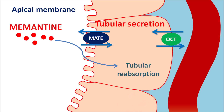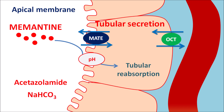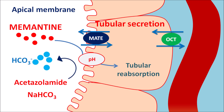Tubular reabsorption is controlled by the pH within the filtrate. Drugs such as acetazolamide, a carbonic anhydrase inhibitor, and sodium bicarbonate, used as an antacid, can increase bicarbonate levels within the filtrate, raising the pH to the alkaline side. At alkaline pH, Memantine is more readily reabsorbed into systemic circulation, resulting in less excretion and potential toxicity. This drug interaction should be carefully checked when Memantine is prescribed.